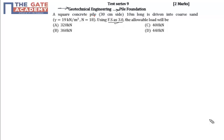A square concrete pile, 30 cm side, 10 m long, is driven into coarse sand with gamma of value 19 kN per meter cube and N value as 18. The ultimate bearing capacity Q_UP is given as A_P into F_P plus F_S into A_S.